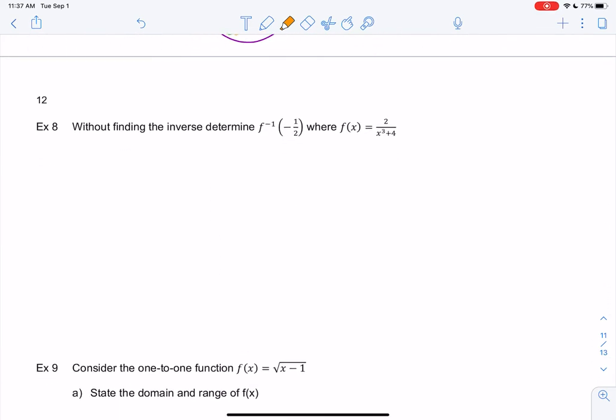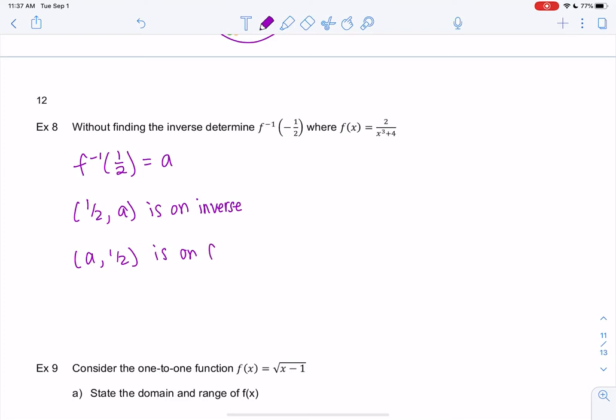Just a couple more examples. Let's see if we can find f⁻¹(-1/2) without ever finding the inverse. Let's say f⁻¹(1/2)—I'll just say it equals 'a' to pick an arbitrary number. I didn't want to pick x or y and confuse anyone. So it means (1/2, a) is a point on the inverse, meaning (a, 1/2) would be on f(x).